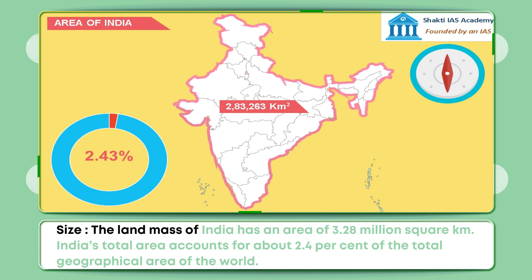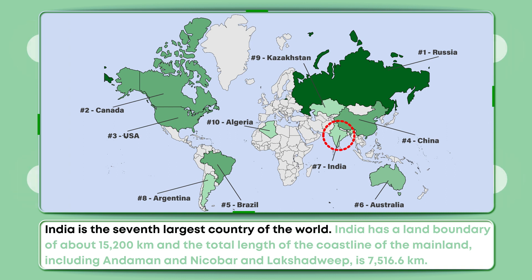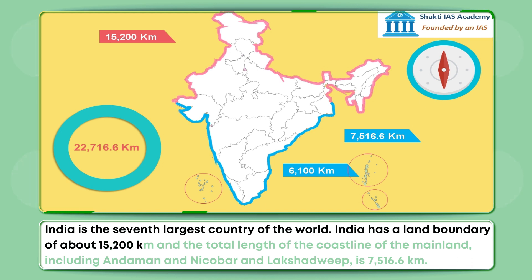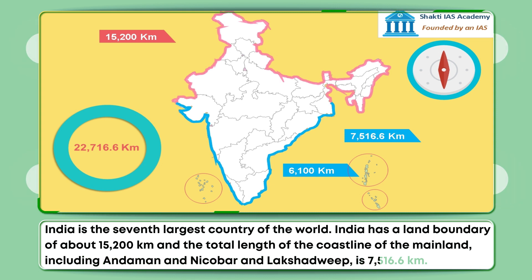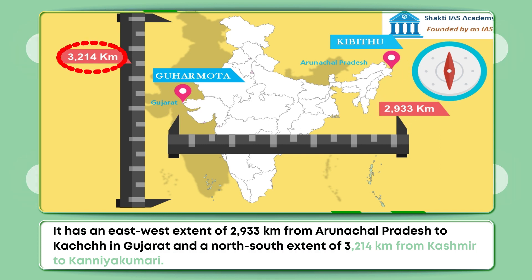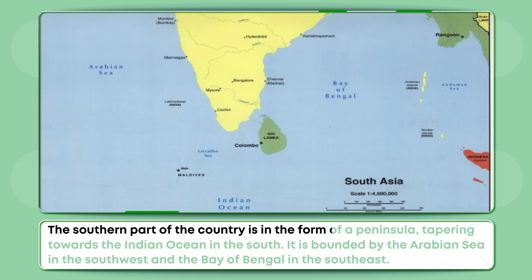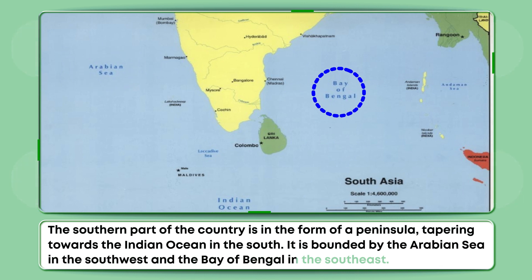Size: The land mass of India has an area of 3.28 million square kilometers. India's total area accounts for about 2.4 percent of the total geographical area of the world. India is the seventh largest country of the world. It has a land boundary of about 15,200 kilometers and a total coastline length, including Andaman and Nicobar and Lakshadweep, of 7,516.6 kilometers. It has an east-west extent of 2,933 kilometers from Arunachal Pradesh to Kutch in Gujarat and a north-south extent of 3,214 kilometers from Kashmir to Kanyakumari. The southern part is in the form of a peninsula tapering towards the Indian Ocean, bounded by the Arabian Sea in the southwest and the Bay of Bengal in the southeast.